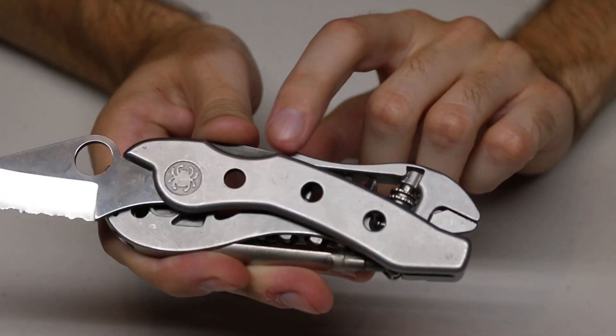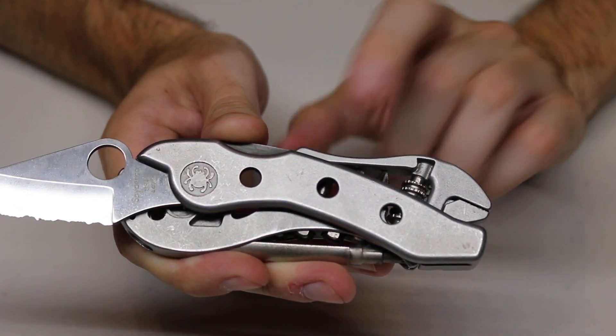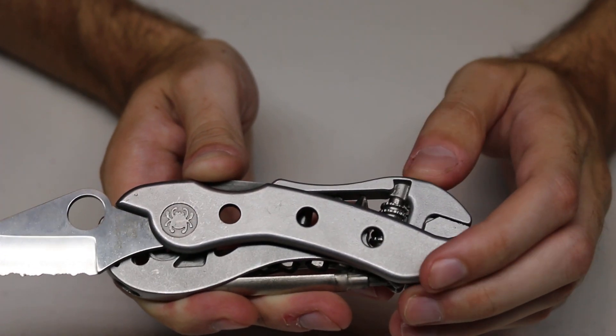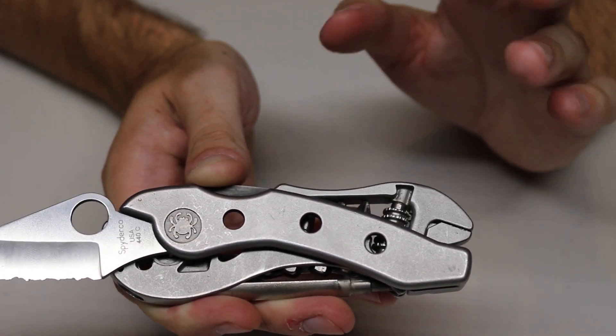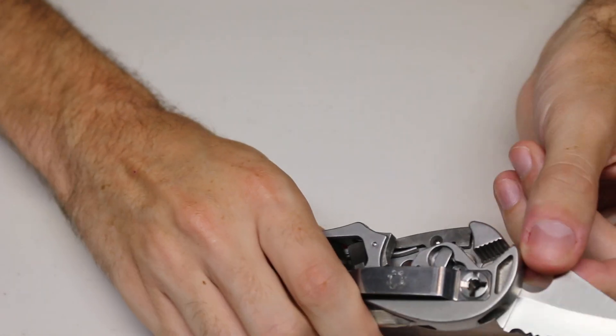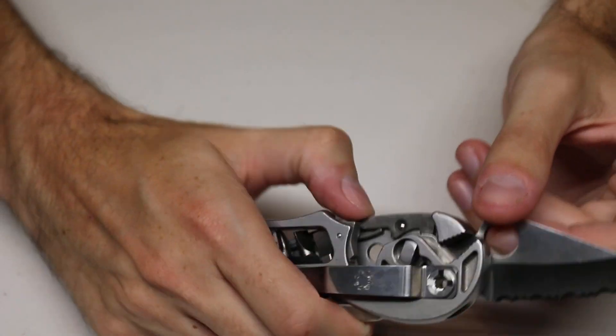And on one side it has Spyderco USA and it uses 440c steel. The handle itself is a different type of steel. I believe it is a cast steel. I did not look into what specific type it was though. So let's close that blade. This does use a mid back lock.